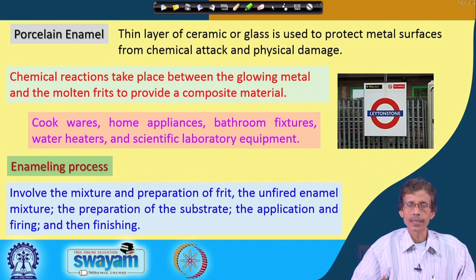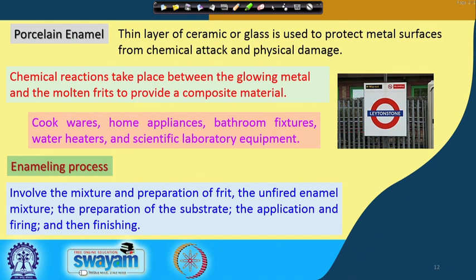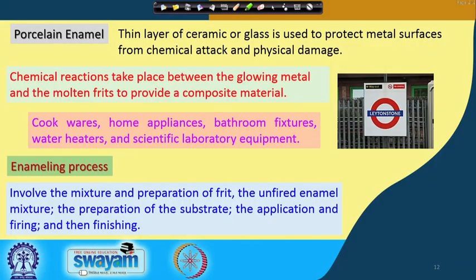Right now, the key terminology to understand is the preparation of the frit — the ceramic or glass material obtained as a starting mixture. The steps are: preparation of the frit, preparation of the unfired enamel mixture, preparation of the substrate, application of the coating, firing at the appropriate temperature, and finally finishing — polishing and other treatments. We will consider all these steps from getting the frit to the finishing process for making the enamel material.